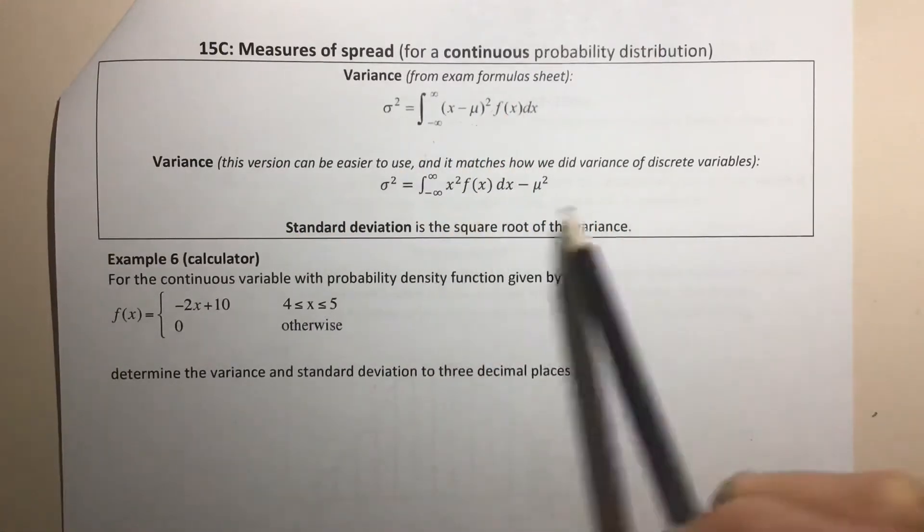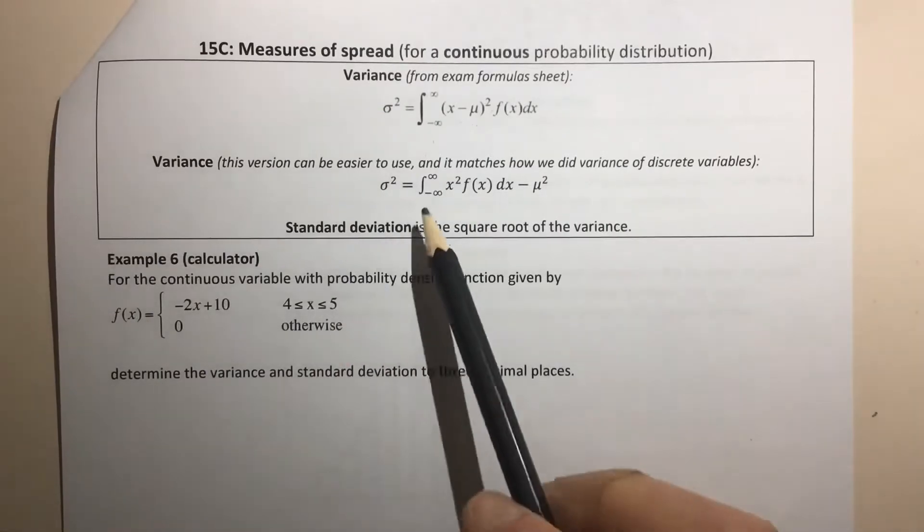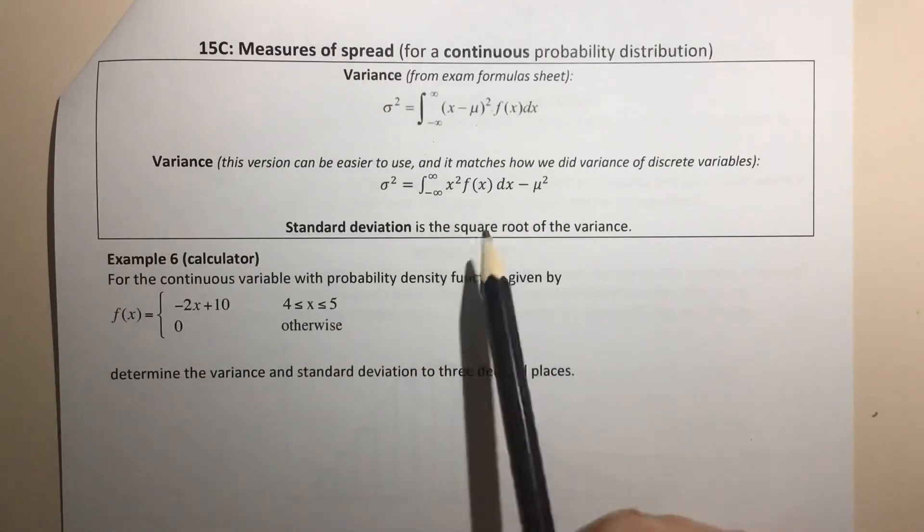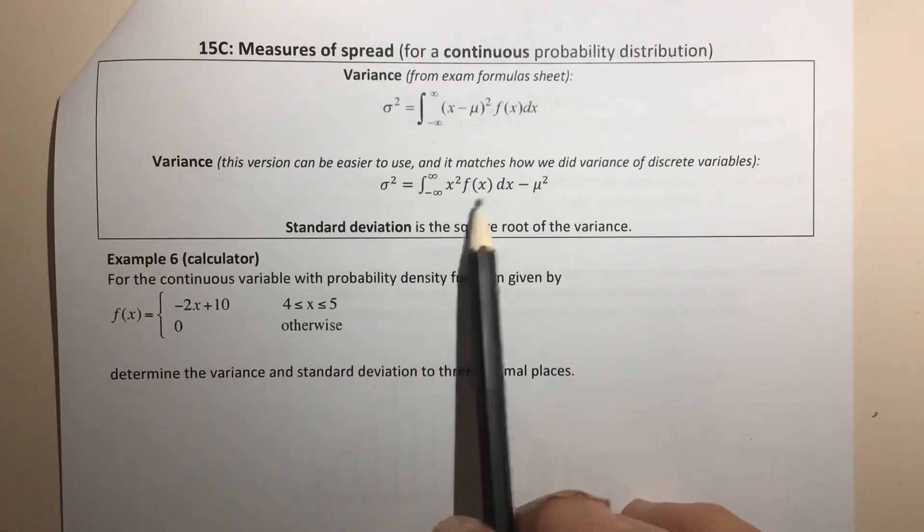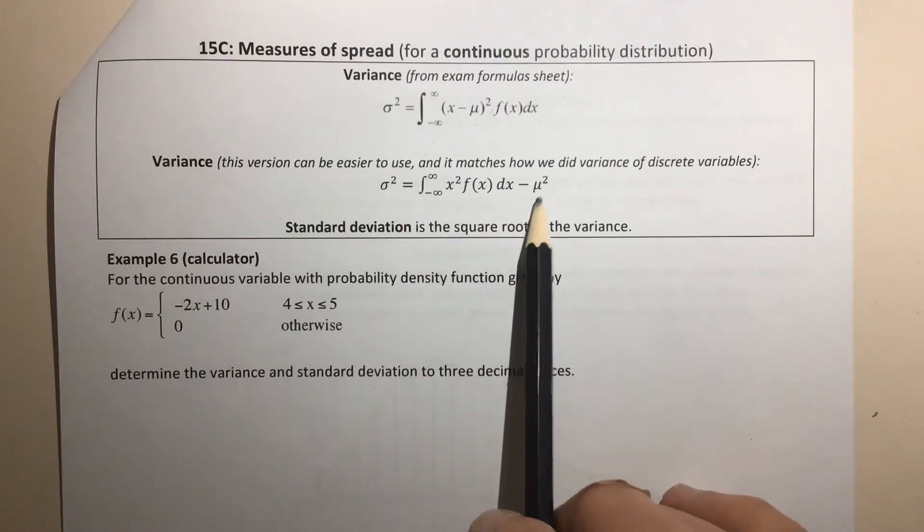The other way, which I tend to prefer, but it's not on the formula sheet, so you may not always remember this formula, is that the variance equals the integral of x² times the function with respect to x, minus the expected value squared.